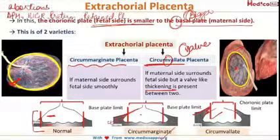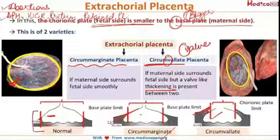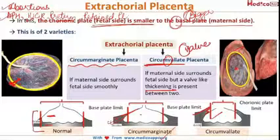Circumvallate placenta leads to an increased risk of abortion, APH, IUGR, preterm labor, retained placenta, and increased watery vaginal discharge, which is also called hydrorrhea gravidarum.